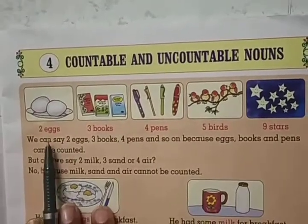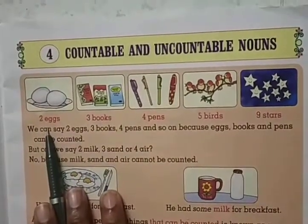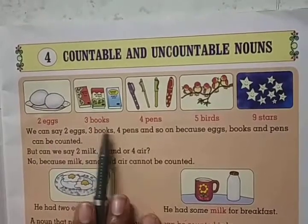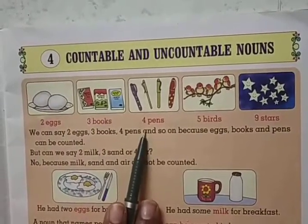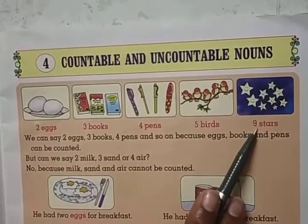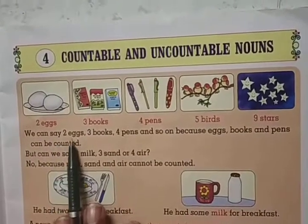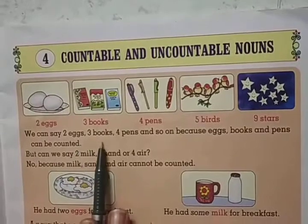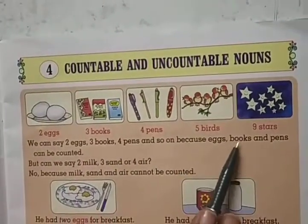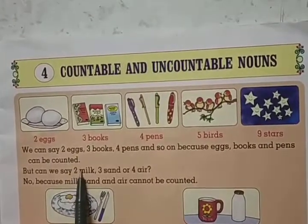Now see, here are the pictures. Here 2 eggs are there, 3 books, 4 pens, 5 birds and 9 stars. Now, we can say 2 eggs, 3 books, 4 pens and so on, because eggs, books and pens can be counted.